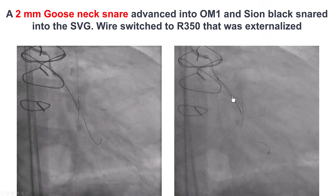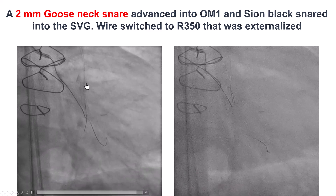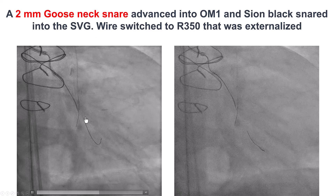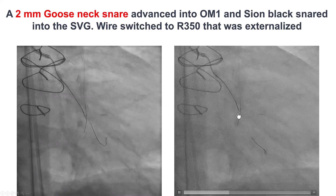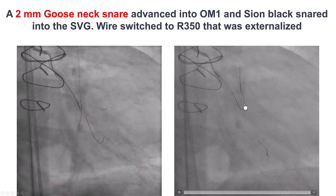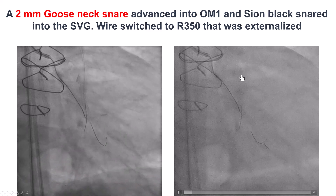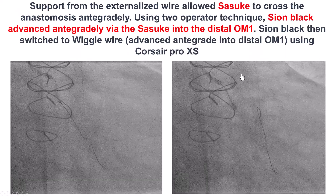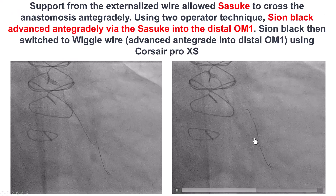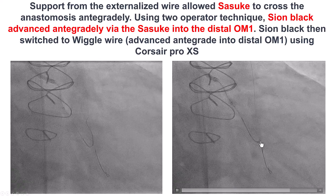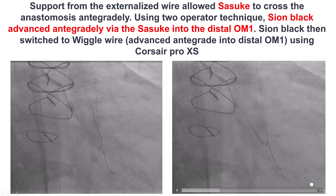The solution we devised was to advance a 2 mm gooseneck snare anterogradely into the inferior branch of the first obtuse marginal. We then advanced the antegrade wire through that snare, tightened it, and snared the wire to bring it back — a creative solution to navigate through the extreme angulation. We eventually externalized the wire, brought the Sasuki dual-lumen microcatheter antegrade, and were able to advance an antegrade wire into the distal obtuse marginal branch.